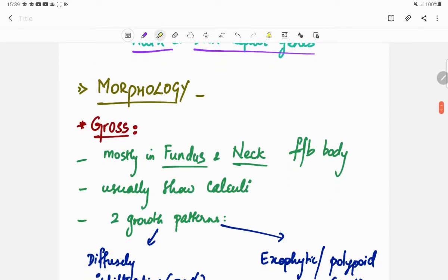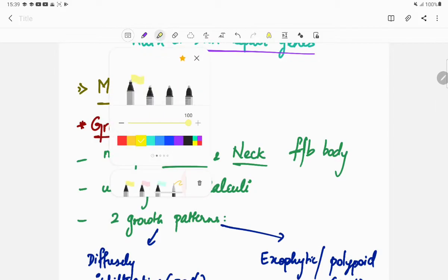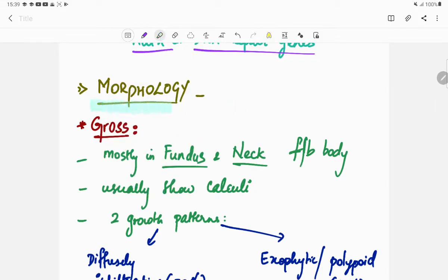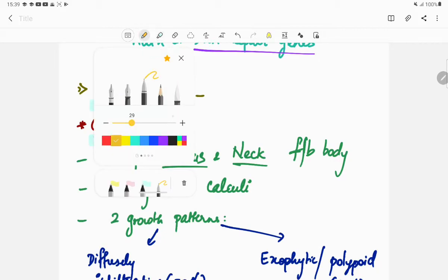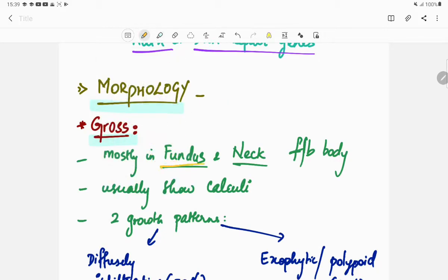Coming to the morphology, first grossly: gallbladder carcinoma occurs mostly in the fundus and the neck of the gallbladder, followed by the body, and it usually shows calculi.